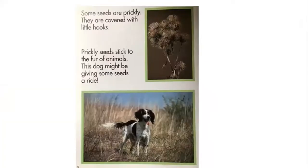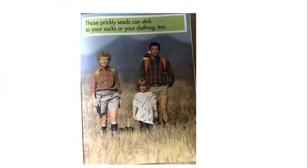Some seeds are prickly — they are covered with little hooks. We saw that in a video last week; we saw those hooks up close. These prickly seeds stick to the fur of animals. This dog might be giving some seeds a ride. Seeds can travel by wind, by water, and by animals when they stick to their fur. Those prickly seeds can also stick to your socks or clothing, so if you're taking a walk, it's a good idea to wear pants or long socks.